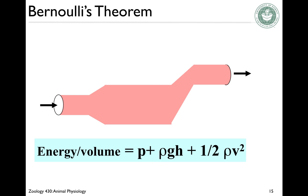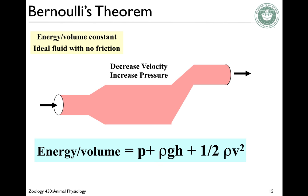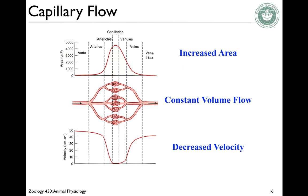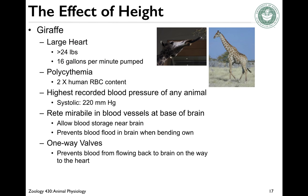When you change things in the system — assuming an ideal fluid with no friction — energy per volume is constant. So when you have decreased velocity, you're going to have increased pressure because energy is conserved. When you increase height, you're also going to decrease pressure. You can see that in the capillary system. But we also have some really interesting effects of height — consider, for example, our friend the giraffe. How do you get blood all the way up that really long neck to the brain?